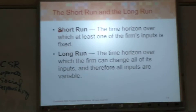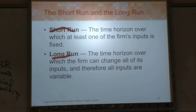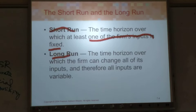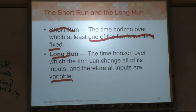Short run and long run — what's the difference? In the short run, there is at least one input that is fixed. In the long run, everything is variable. We also have something called the very long run, where everything is variable — every input is variable — and also the technology is variable.